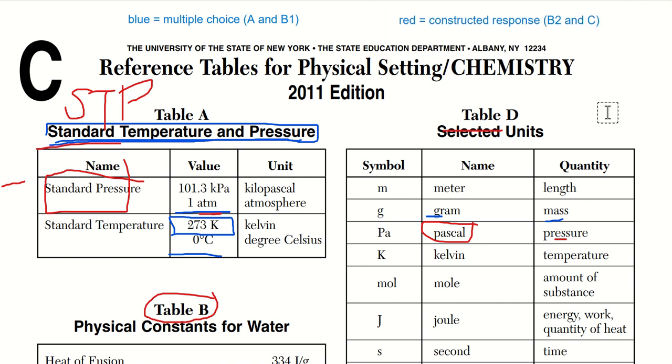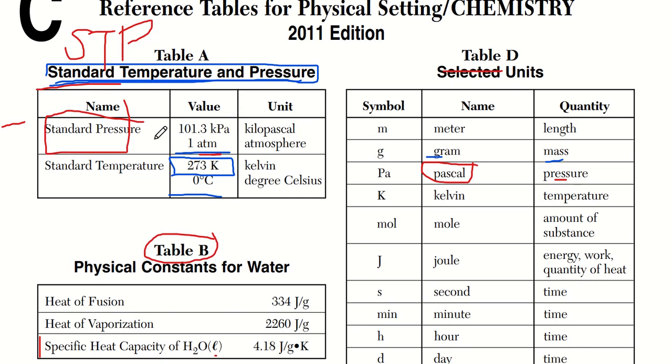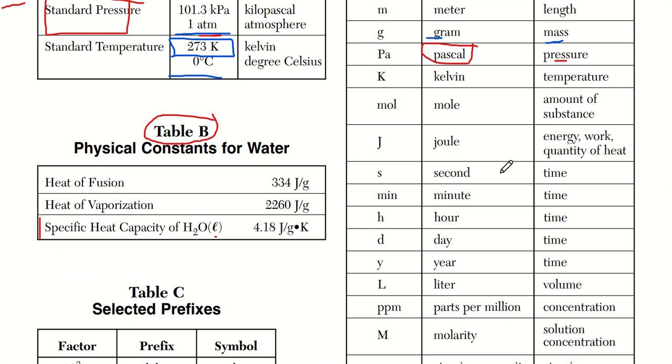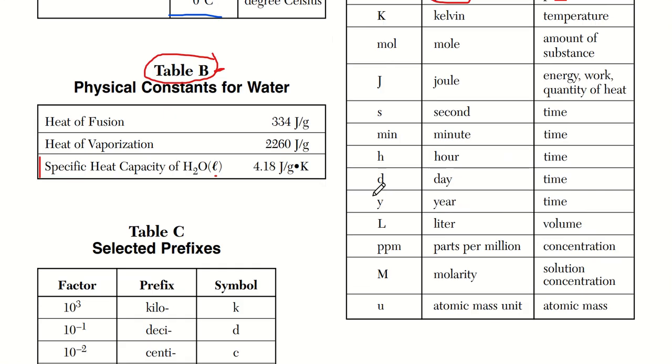So if we look through the course of the exam when I took it, we use almost every single reference table. You can see STP was multiple times. You can see table D multiple times. I did have to do some calculations here.